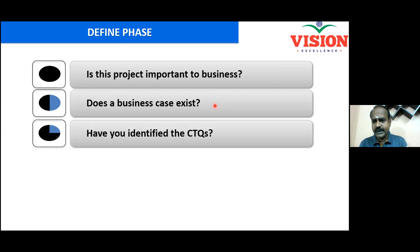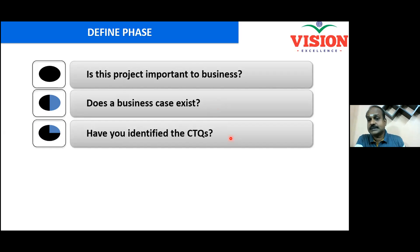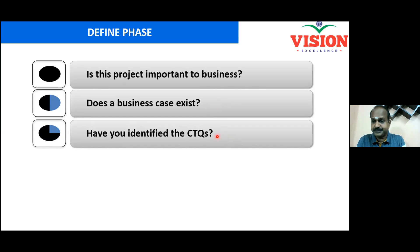Have you identified the CTQs? This is a very important question. CTQ means Critical to Quality. These are the characteristics in your product or features in your product or service which actually impact your customer satisfaction. CTQ means Critical to Quality characteristics — nothing but measurable characteristics.